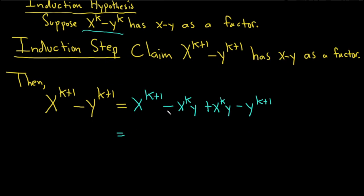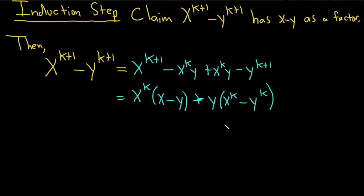So this is what I mean. Watch this. If you pull out an x to the k, you're left with x minus y. That's why I put that there, because I wanted to get an x minus y. Notice that if you multiply x to the k times x to the 1, you add the exponents. That's how you get the k plus 1. And then here we'll pull out a y. So this will be x to the k minus y to the k.